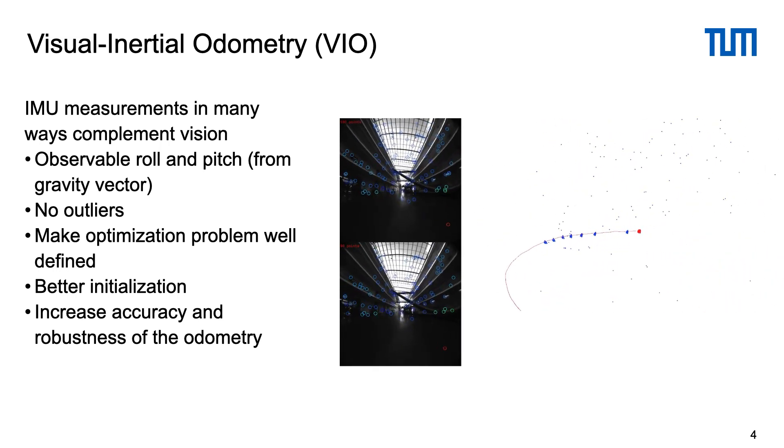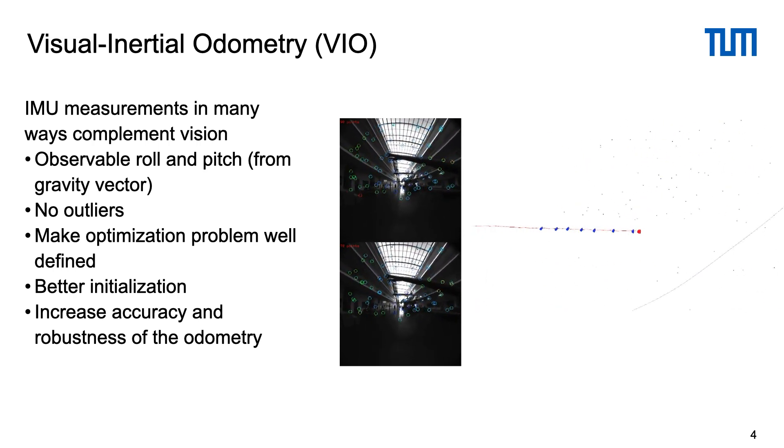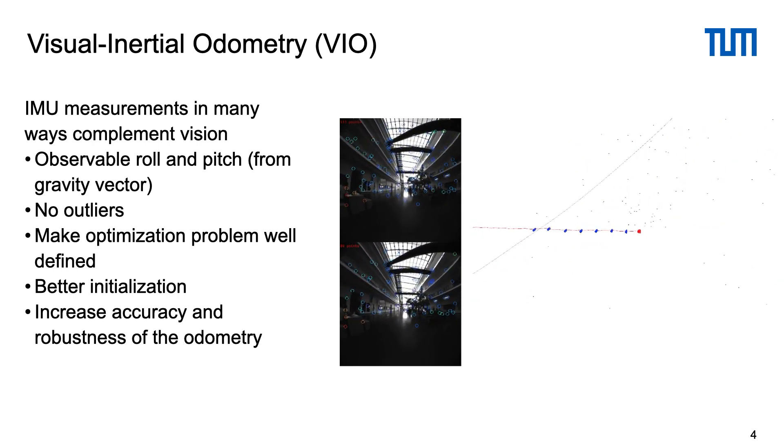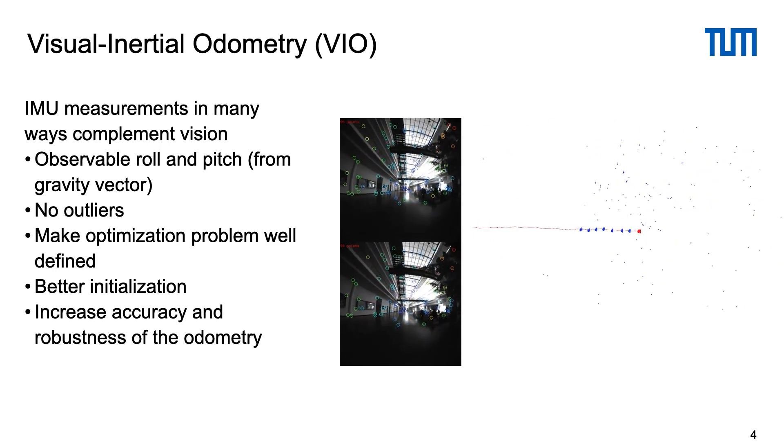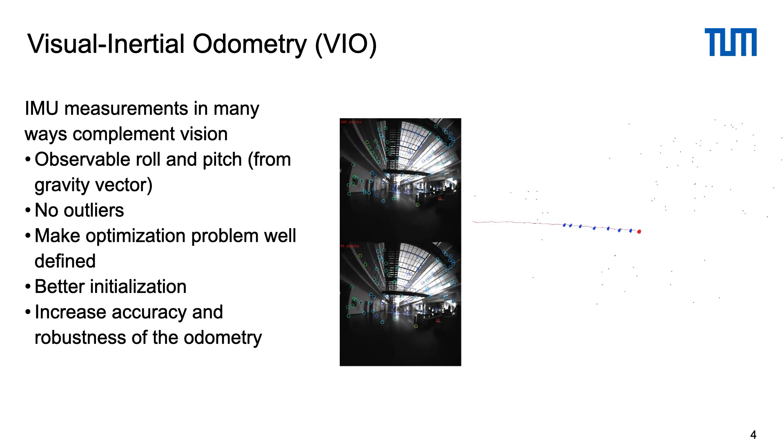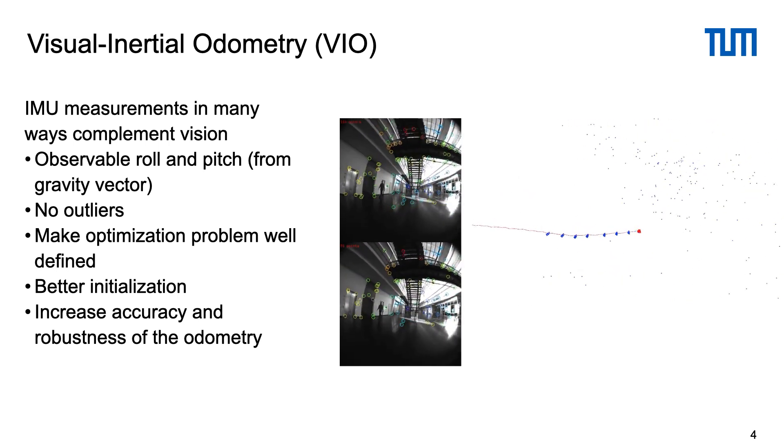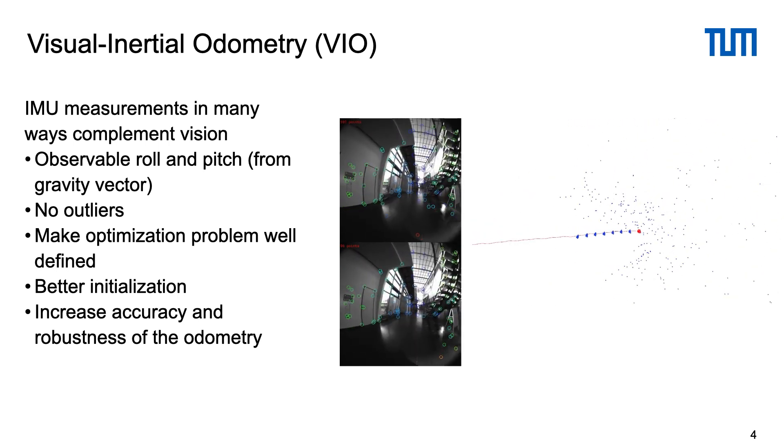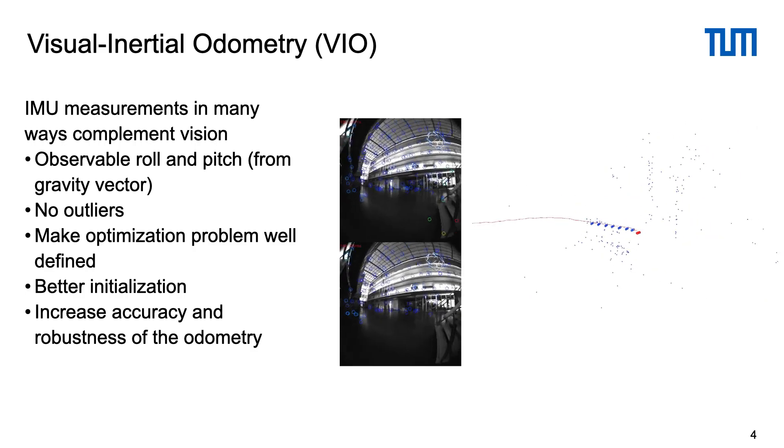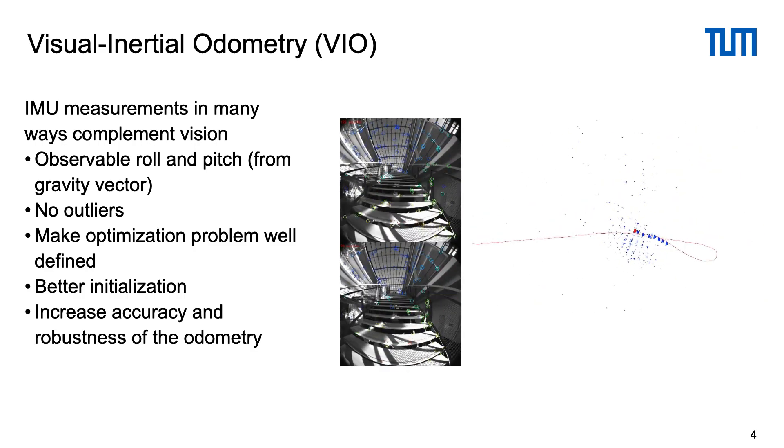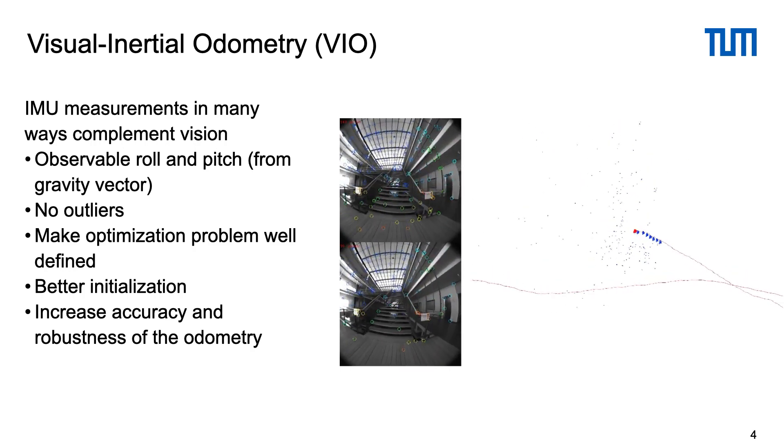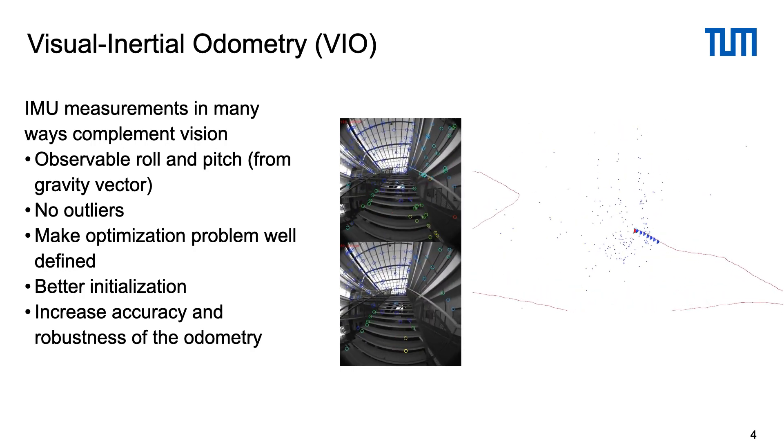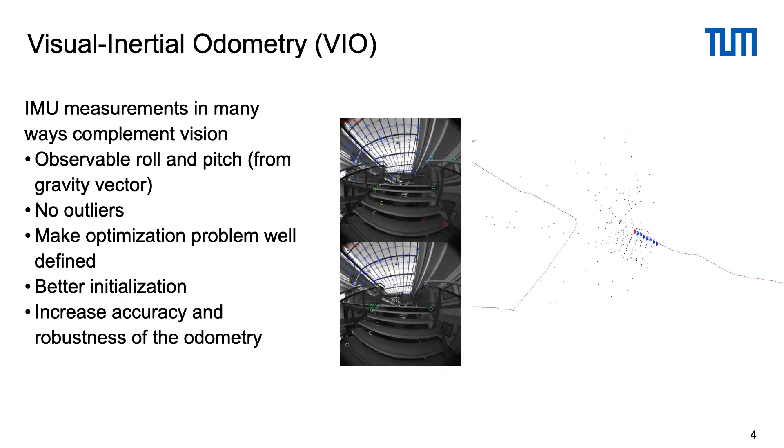IMU predictions can also be used for better initialization and increased robustness and accuracy of the system even when the visual data is not available. The approaches for visual inertial odometry have been a research topic for many years, but getting globally consistent gravity aligned maps is still an open research challenge.